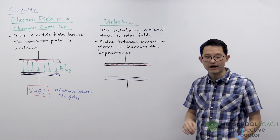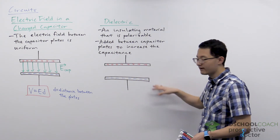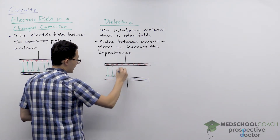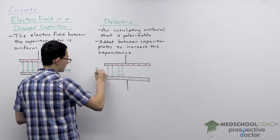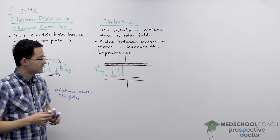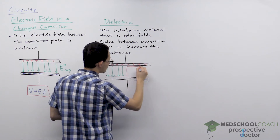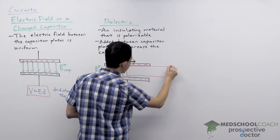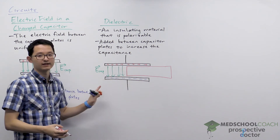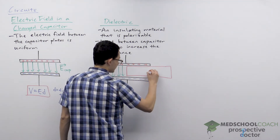I want to talk about how dielectrics are able to increase the capacitance. Here I have a capacitor, and this capacitor is charged, and we know that it has an electric field. What I want to look at now is inserting the dielectric. Let's say we're in the middle of adding our dielectric — we have added it halfway. In a real capacitor you just add it in completely; this is just to better understand what's going on.